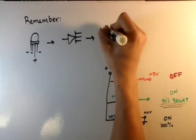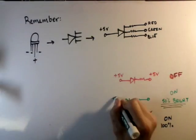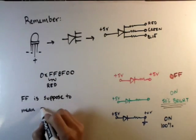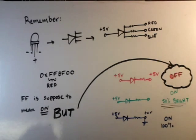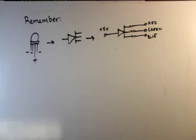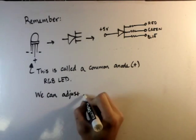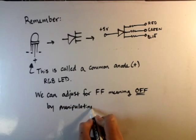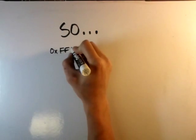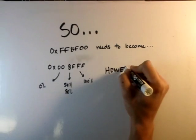It's called common anode because all the inputs are shared. However, all the grounds of the red, green, and blue are independent of one another, which is why the PWM pins are hooked up to those outputs. Notice that FF is supposed to be on, but the LED is showing that it's off. And 00 is supposed to be off, but the LED is showing that it's on. So if we want this to be correct according to the hexadecimal color code, we just need to manipulate code so that when it receives that hexadecimal input, it converts it to the proper value for the RGB LED to display the correct color.